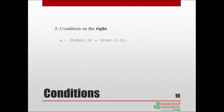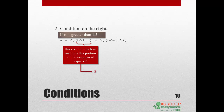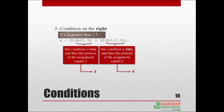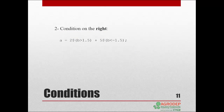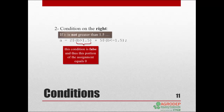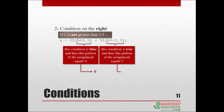We can also write the previous expression by using the dollar condition on the right. If b is greater than 1.5, then this condition is true and so this portion of the assignment equals 2, but this condition is false and so this portion of the assignment equals 0, giving a sum of 2. If b is not greater than 1.5, this condition is false and so this portion equals 0, but this condition is true and so this portion equals 5, giving a sum of 5.